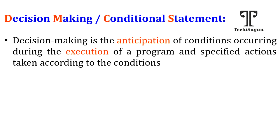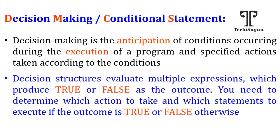For example, let us take withdrawing money from an ATM machine, where we will swipe the card and enter the pin number. When the given pin number is correct, we can go further and withdraw money. Whenever the given value is wrong, it will display some error message and execution stops. This is a simple example of decision making — the application works based on certain conditions.